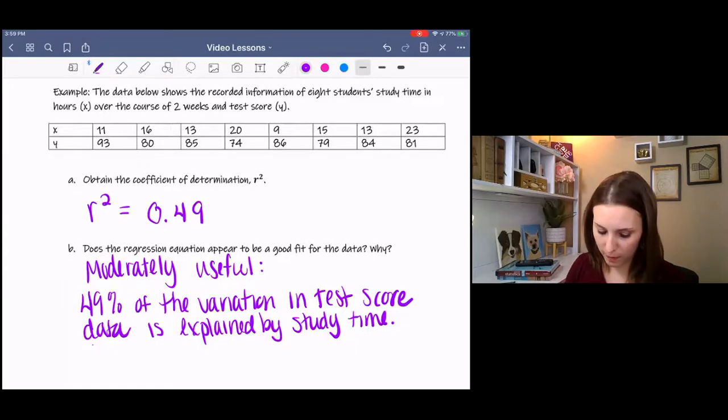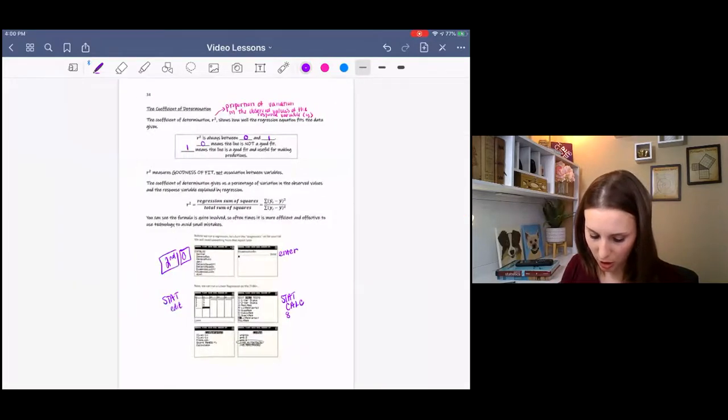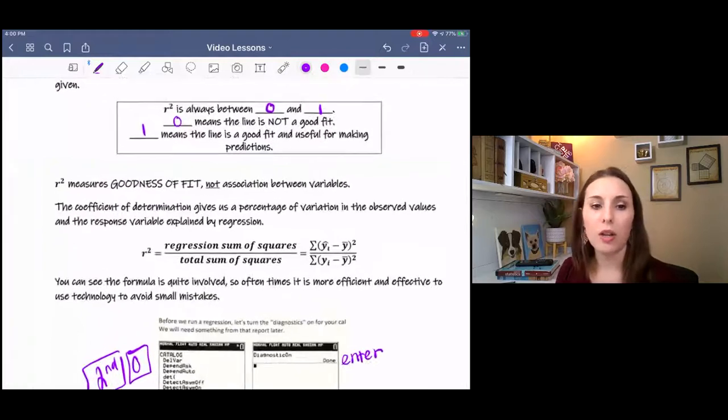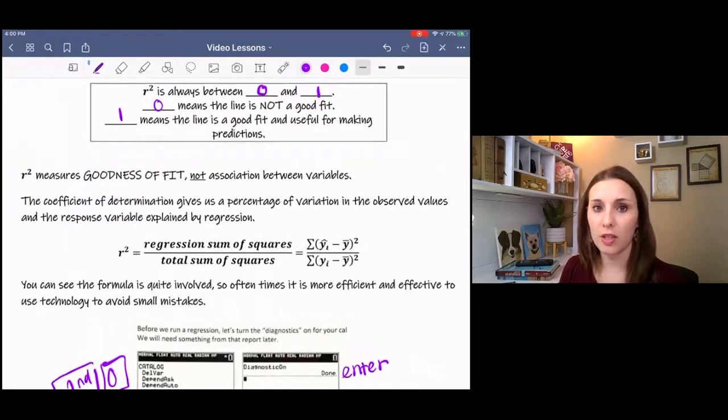So that wording came from here, where the coefficient of determination gives us a percentage of variation in the observed values, which is test score, based on the predictor variable study time.